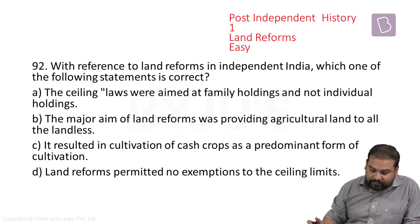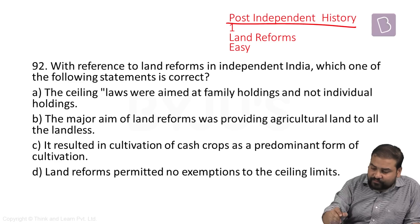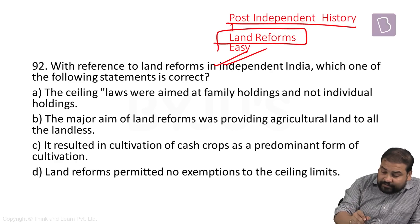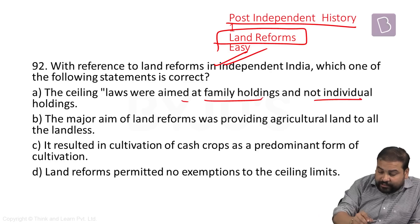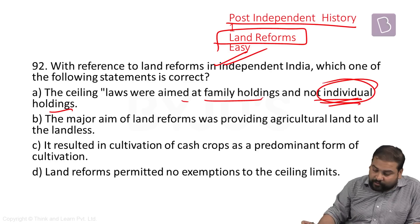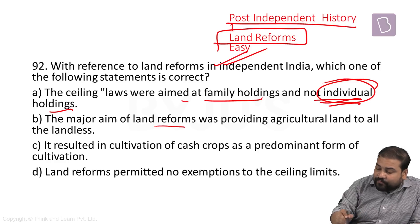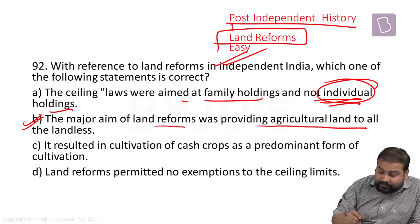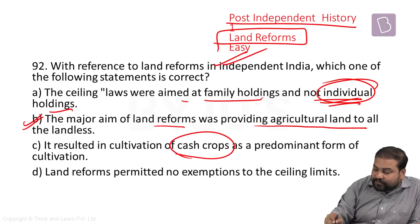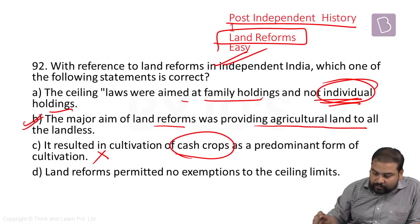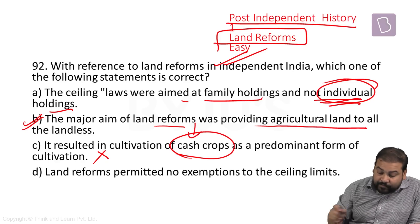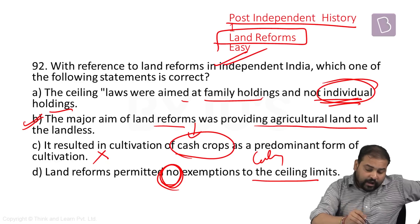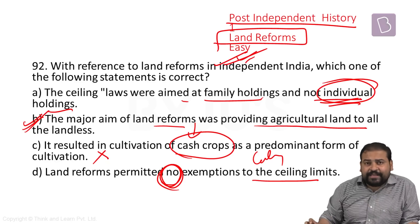The last question comes from post-independence history on land reforms — I'm taking it as easy. Ceiling laws were aimed at family holdings and not individual — wrong, it was also aimed at individual holdings. Point two — major aim of land reforms was providing agricultural land to all the landless — appears to be a good statement. Option C — resulted in cultivation of cash crops as predominant form of cultivation — absolutely wrong, no way this is correct. Land reforms permitted no exemptions to ceiling limits — also wrong, there were exemptions. So the answer is clearly B.